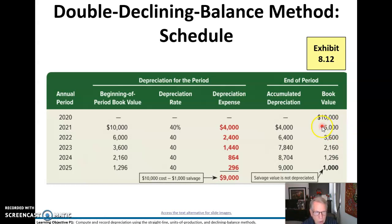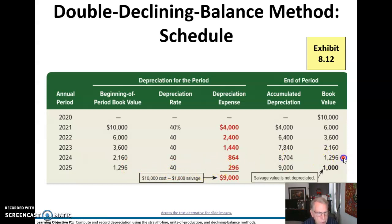We bring this $6,000 over and do the process again and again. However, in the last period you'll see that we had $1,296 times 40 percent — that's not going to be $296. We only have $296 left to bring our book value down to $1,000. So we plug that last year at $296, which hits total depreciation expense of $9,000 over the life of the asset.